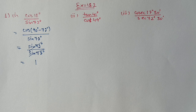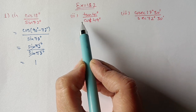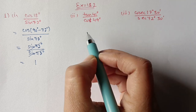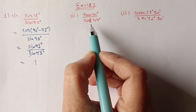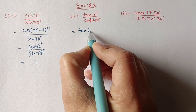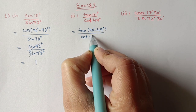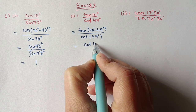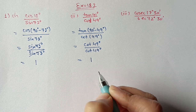Second part: tan 41° / cos 49°. Note: in some books it is written as cos 49°, so you can verify and change accordingly. Here 41 and 49 are complementary. We write tan 41° = tan(90° − 49°). Using tan(90 − θ) = cot θ, we get cot 49° / cos 49°... which cancels to give 1.